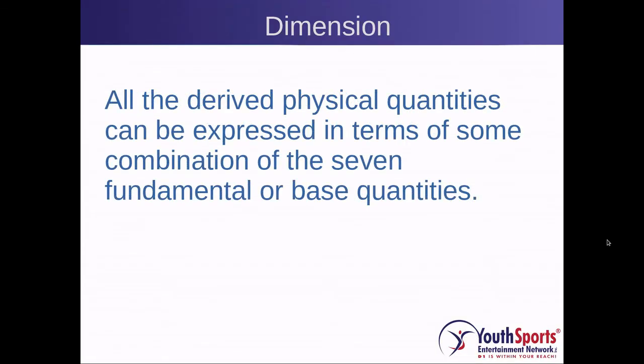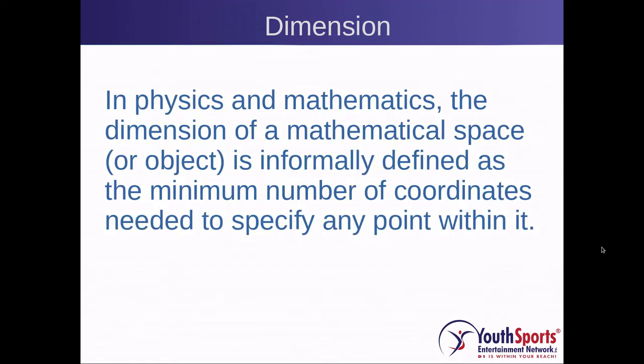All physical quantities can be expressed as a combination of seven fundamental or base quantities. In physics and mathematics, the dimension of a mathematical space or object is defined as the minimum number of coordinates needed to specify any point within that space.